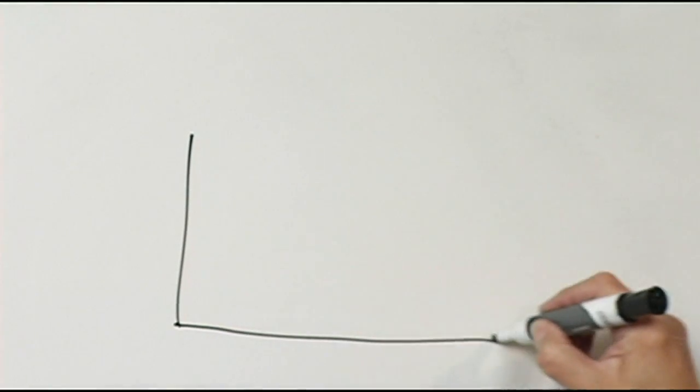The Pythagorean theorem relates the size of a right triangle to the hypotenuse. Let me show you with a diagram.